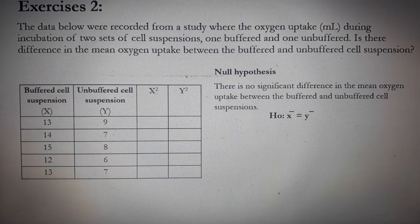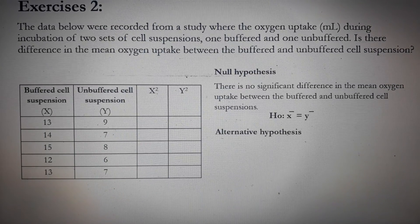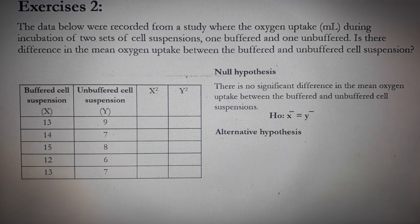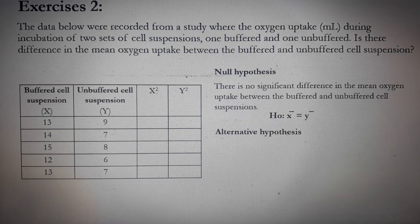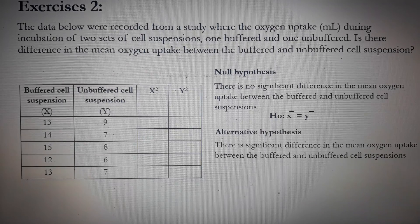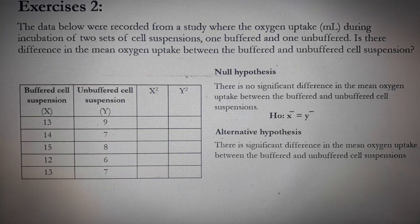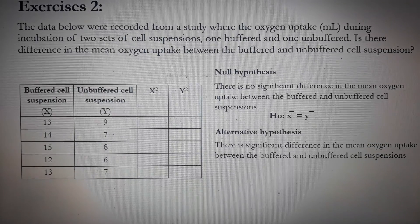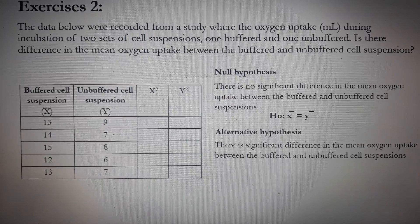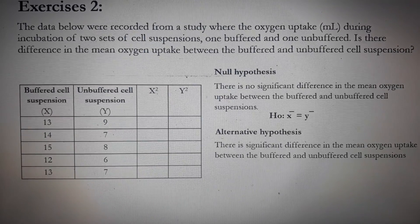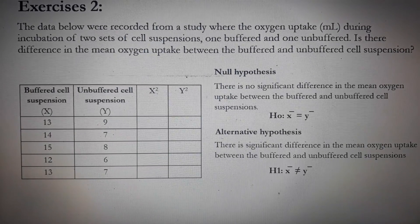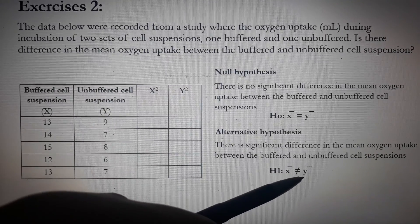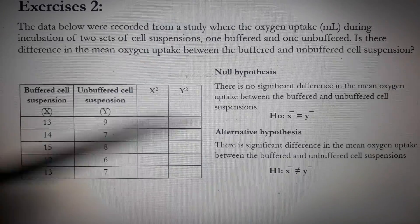Now for the alternative hypothesis, it's the hypothesis of significance. So you can simply remove the no. So the alternative hypothesis that I wrote there is there is significant difference in the mean oxygen uptake between the buffered and unbuffered cell suspension. So in symbol, it's H1. So you can see that the mean of x is not equal to the mean of y because there is difference.